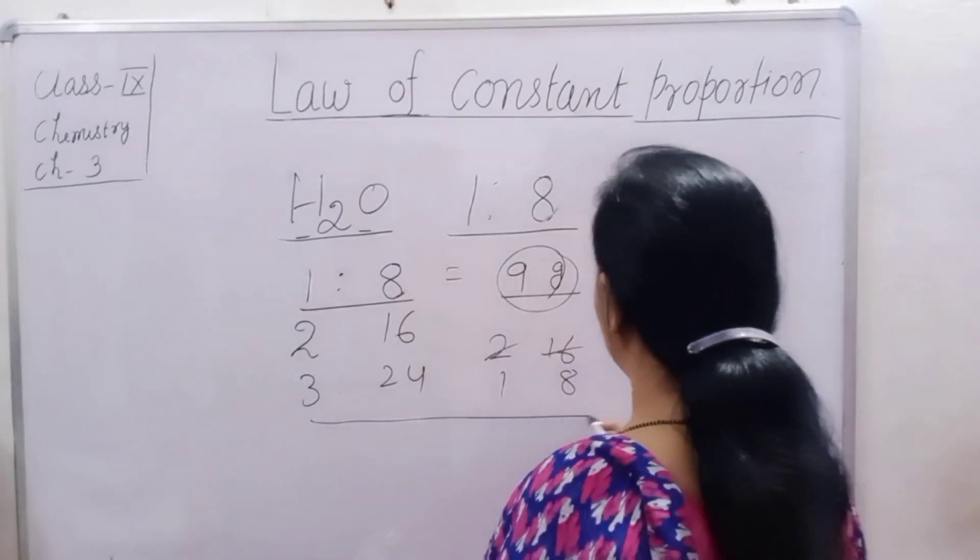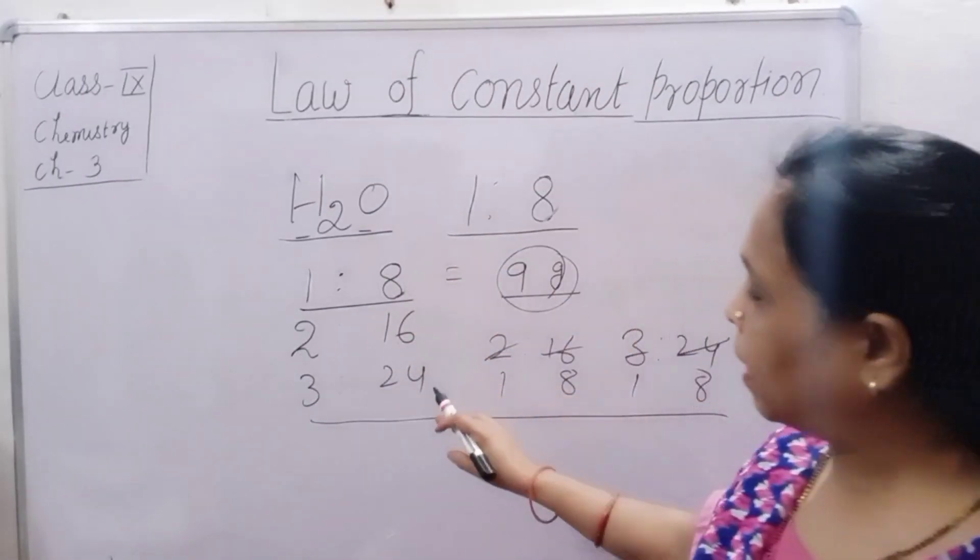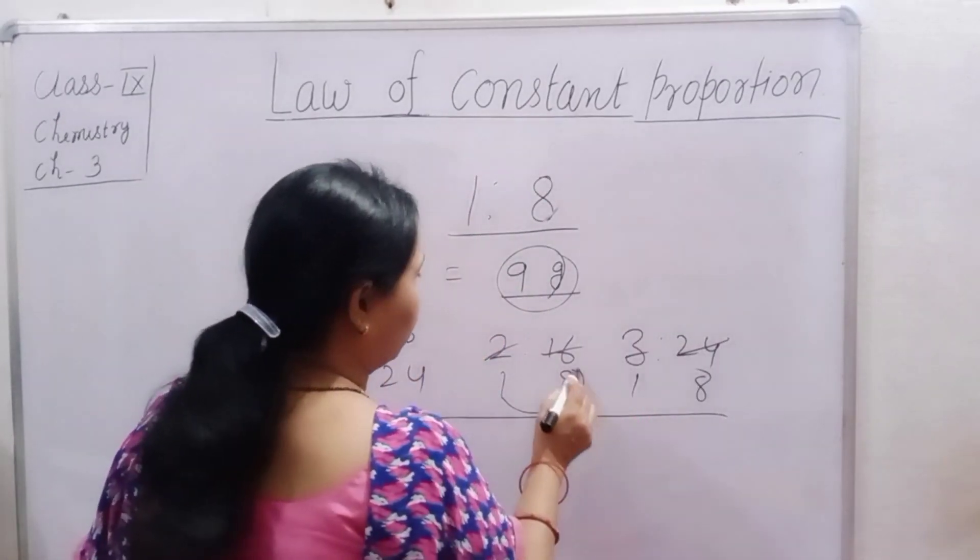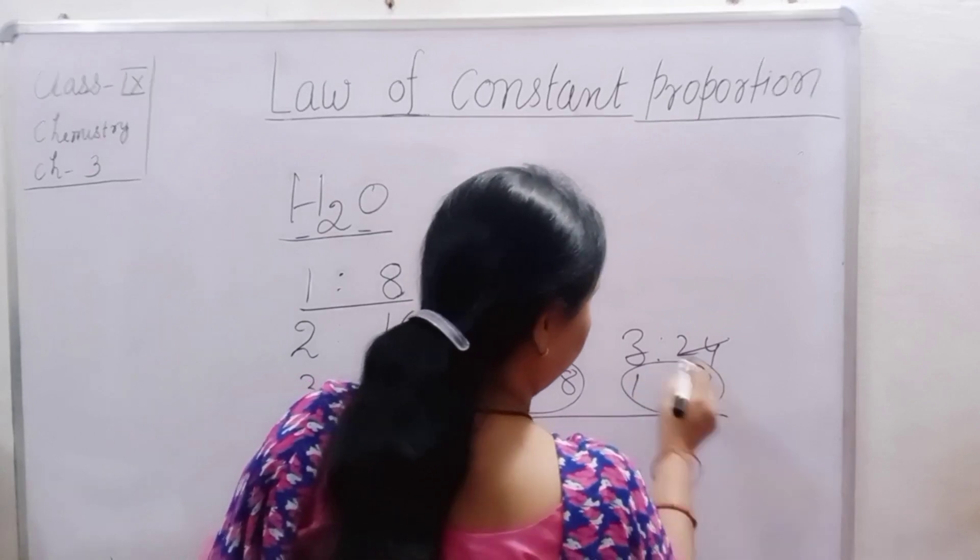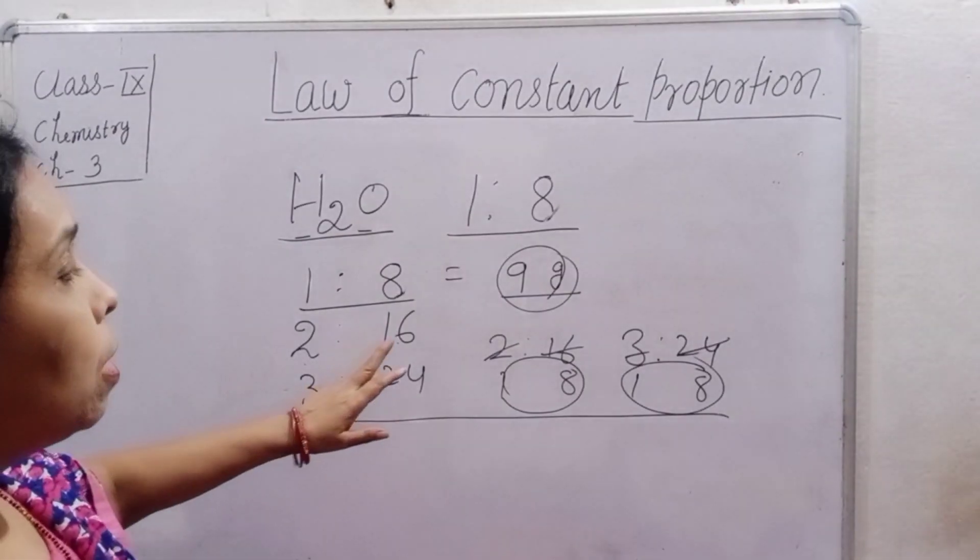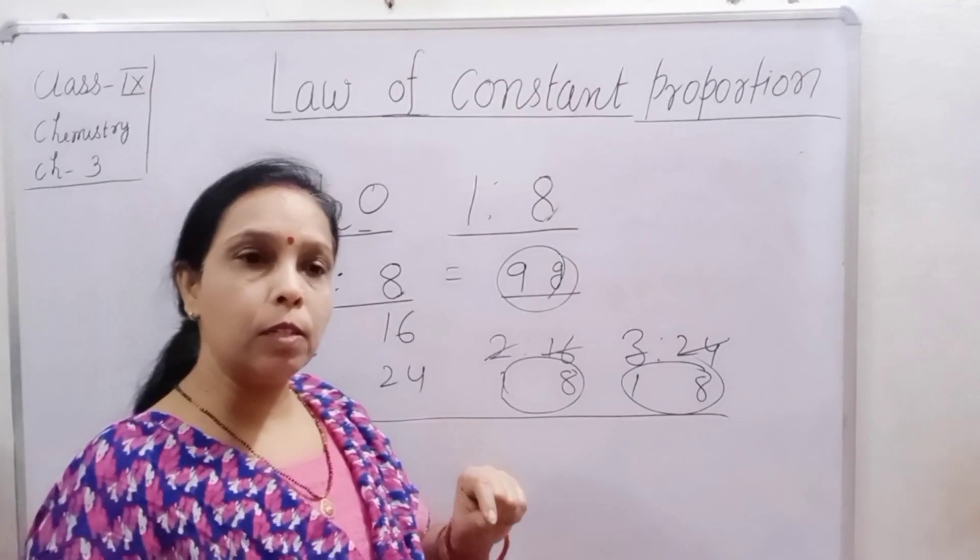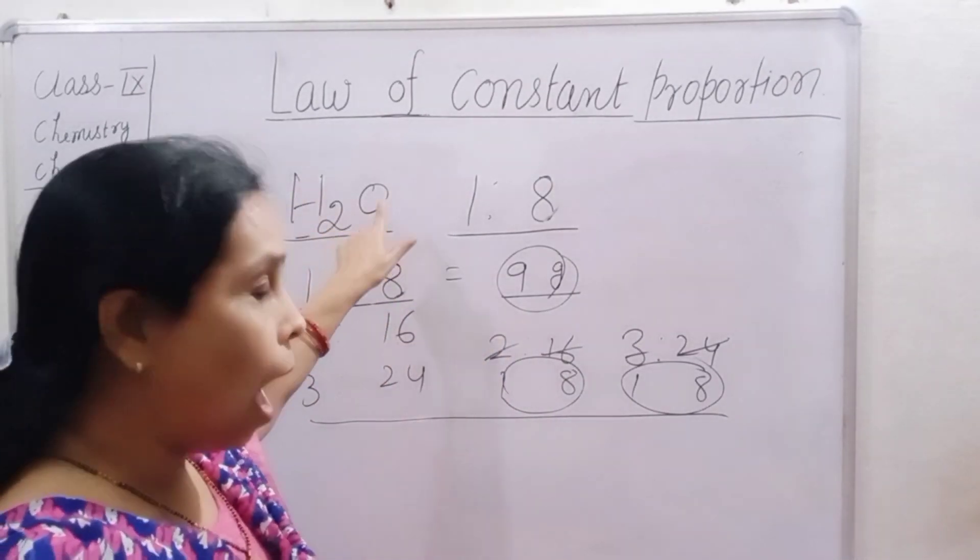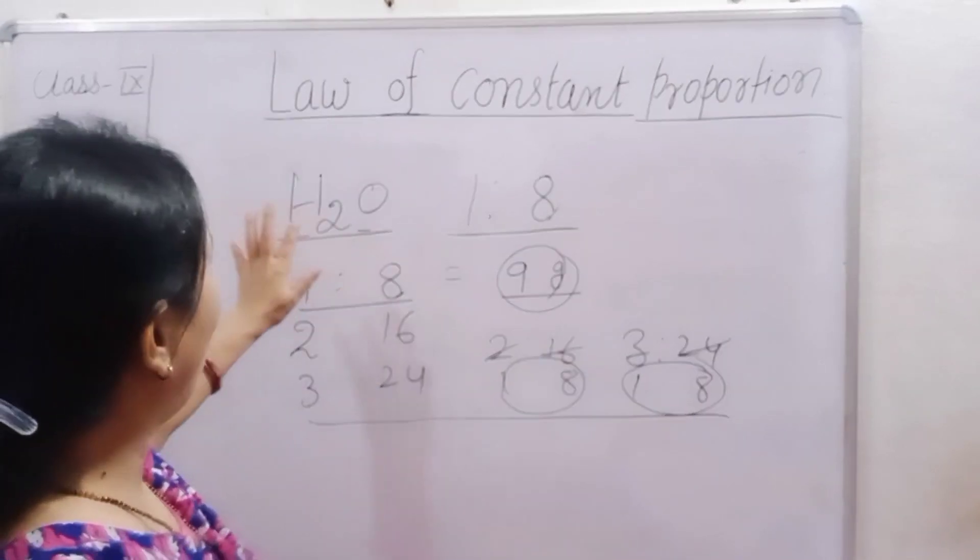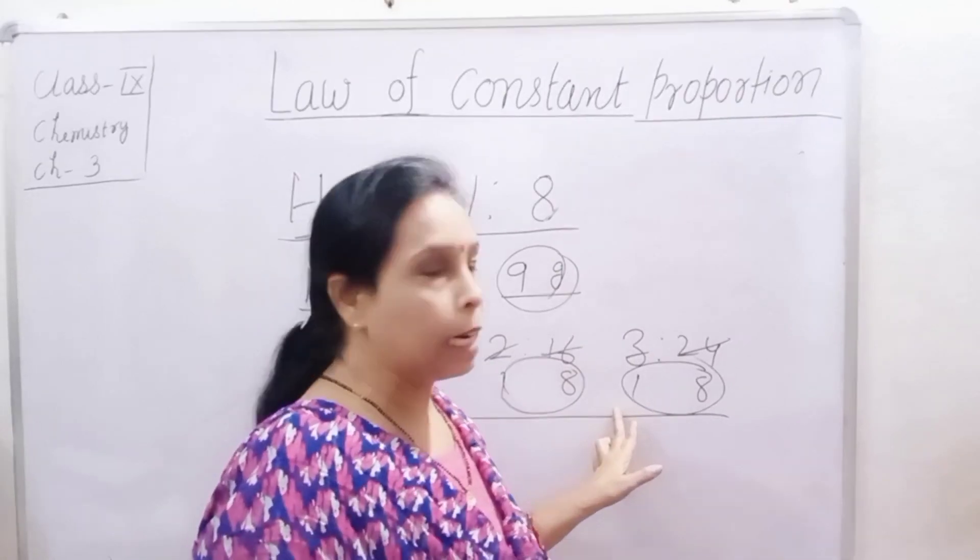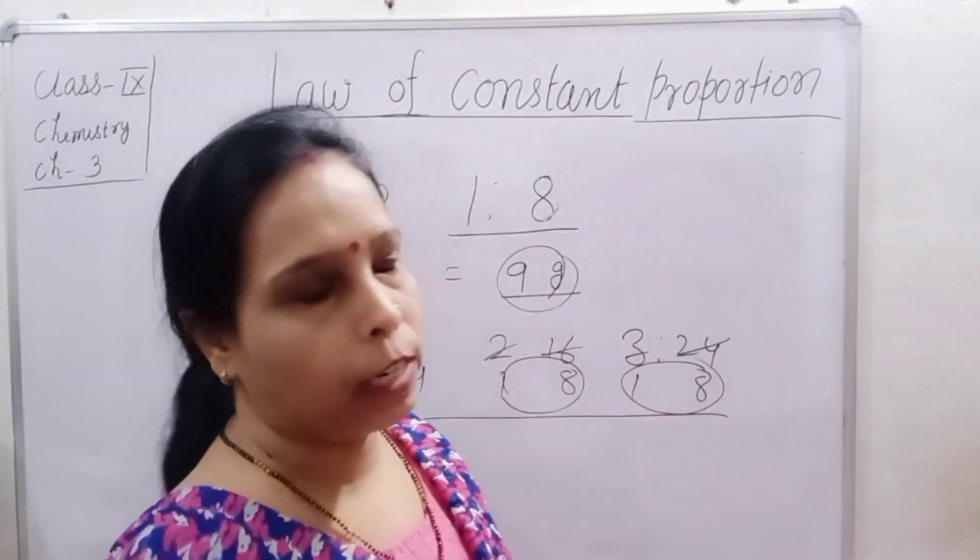It means, in all cases, we can see here, proportion is always one is to eight. Clear? So, two sentences are must here. First is same element and second is constant proportion by mass. It is called law of constant proportion.